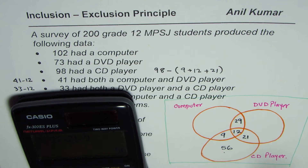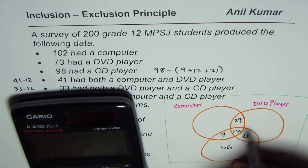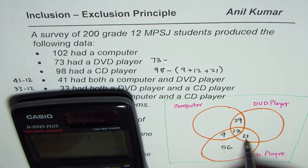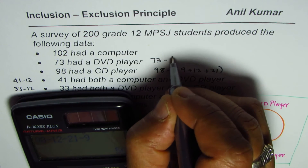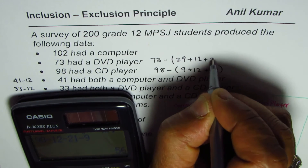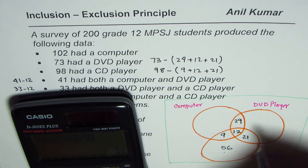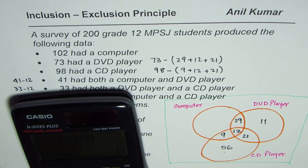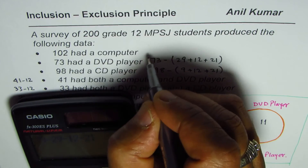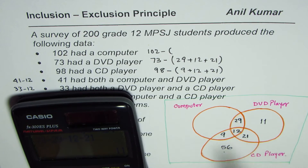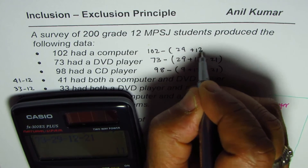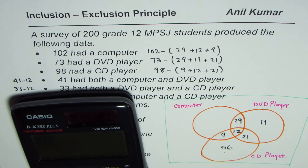73 had a DVD player. So from 73, we take away 29, 12, and 21, which gives us 11. We place 11 in the DVD only region. For computers, 102 total — take away 29, 12, and 9 — and that gives us 52 for the computer only region.